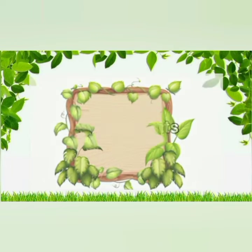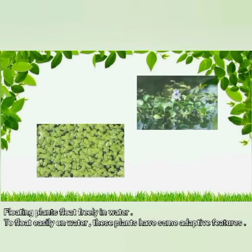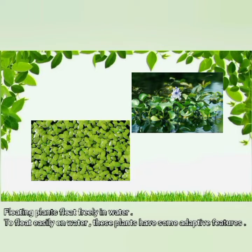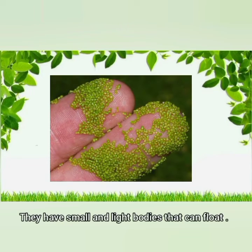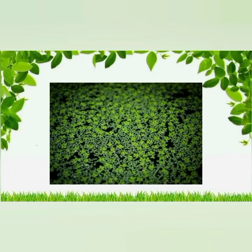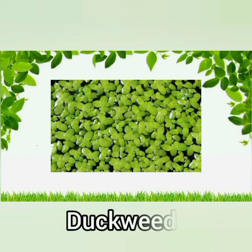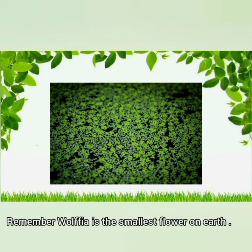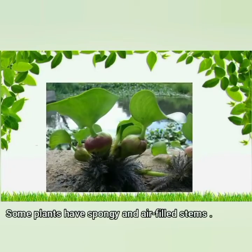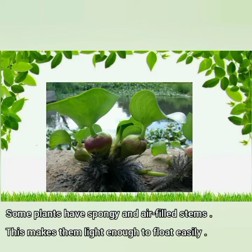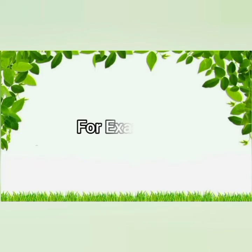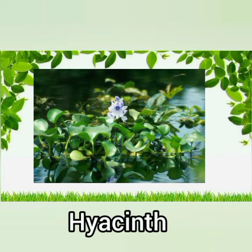Floating plants float freely in water. To float easily on water, these plants have some adaptive features. They have small and light bodies that can float. For example, Wolffia and duckweed. Remember, Wolffia is the smallest flower on earth. Some floating plants have spongy and air-filled stems, which makes them light enough to float easily. For example, water hyacinth.